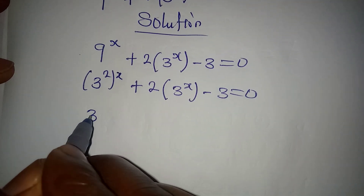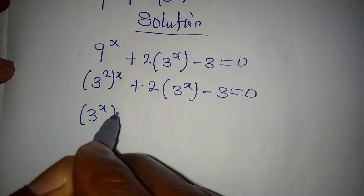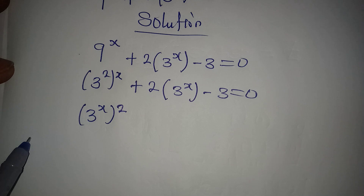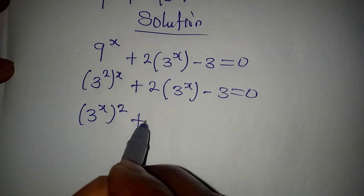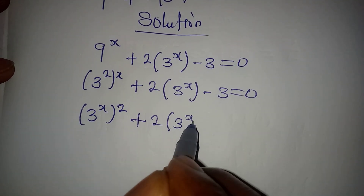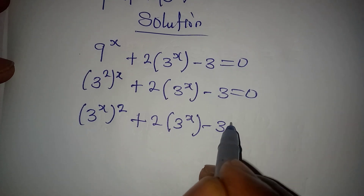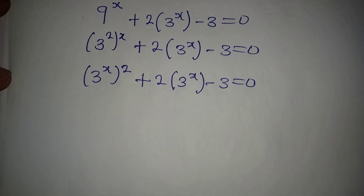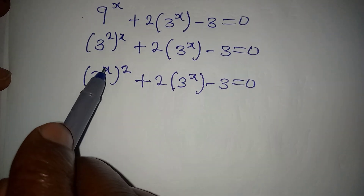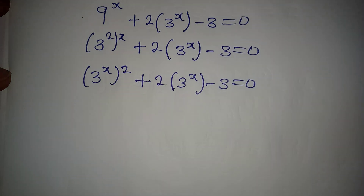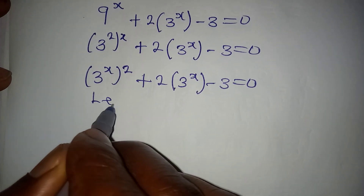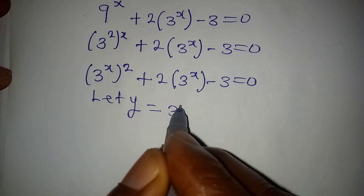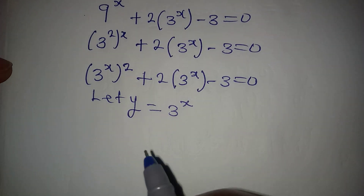From here we have 3 to the power of x, to the power of 2 — because I can take the 2 outside and bring x inside — then plus 2 times 3 to the power of x, minus 3, equal to 0. From here we have 3 to the power of x appearing in two places, so let's replace it with y.